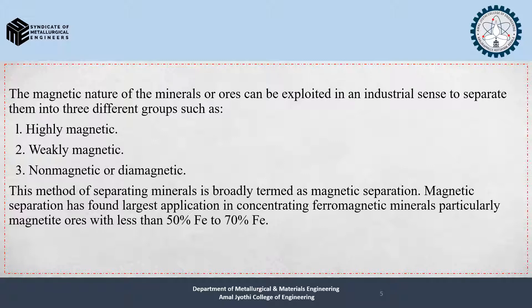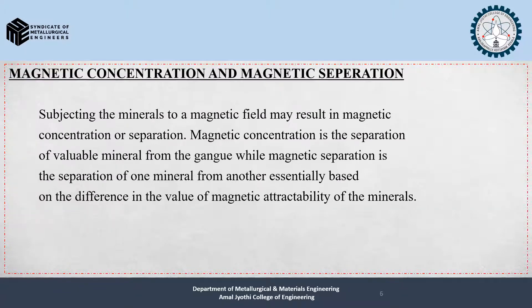Subjecting minerals to a magnetic field may result in magnetic concentration or separation. Magnetic concentration is the separation of a valuable mineral from the gangue, while magnetic separation is the separation of one mineral from another, essentially based on the difference in the value of magnetic attractability of the minerals.